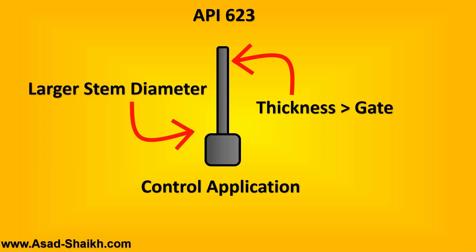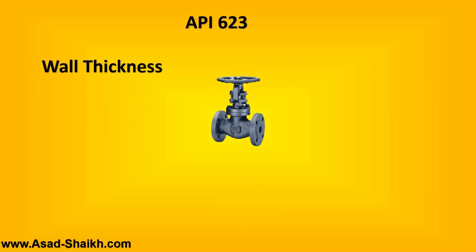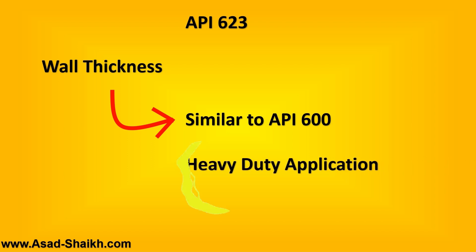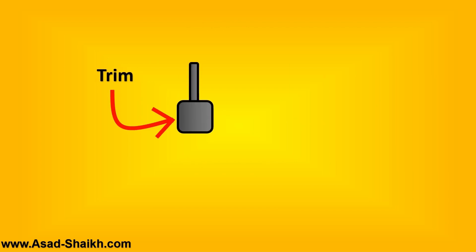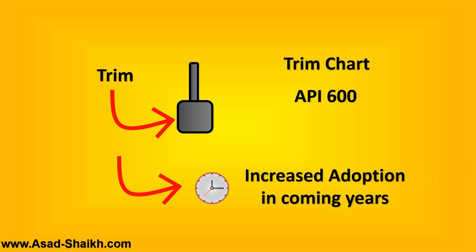Thus API 623 was born, which takes care of all these details for globe valves — specifically defining larger stem diameter and thicknesses. The wall thickness for other components in API 623 is almost similar to API 600, making it a very heavy-duty valve for refinery applications. A trim chart similar to API 600's — with Trim 1, Trim 2, etc. and special materials — has also been compiled for API 623, and adoption of this standard is expected to increase significantly in coming years.